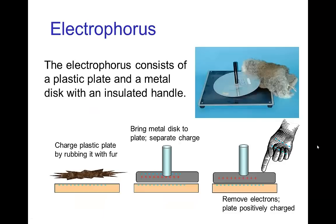We can use electrostatic induction to actually charge an object by first separating the charge to one side in a conductor, and then removing the charge from one side, leaving charge on the other side. This happens with the electrophorus. We have a plastic plate, rub it with fur to get it charged, and then bring the electrophorus metal plate onto the plastic bottom. The electrons are pushed away to the top of the plate because the plastic is negatively charged, and then we touch the electrophorus plate so the electrons run into our hand, leaving a positively charged plate.